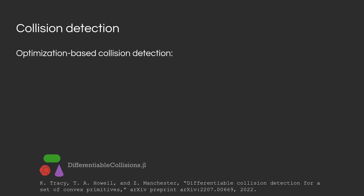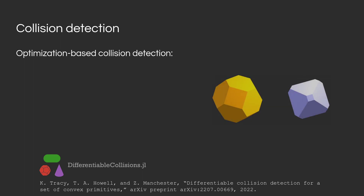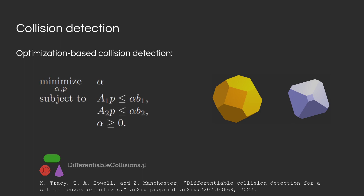However, in some cases we don't have access to an analytical expression for the signed distance function. In such cases, we can resort to optimization-based collision detection. So if you have two shapes and you want to find the signed distance function between them, you can solve an optimization problem such as this one.